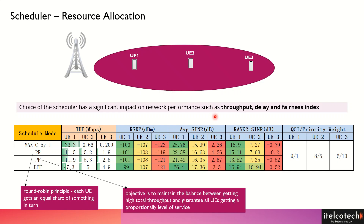It depends upon different scenarios: what throughput the customer wants, what kind of service they want, what kind of delay we need to ensure for that service, and how the fairness index is maintained — so that user 1 doesn't consume all the resources just because it is closer to the base station.